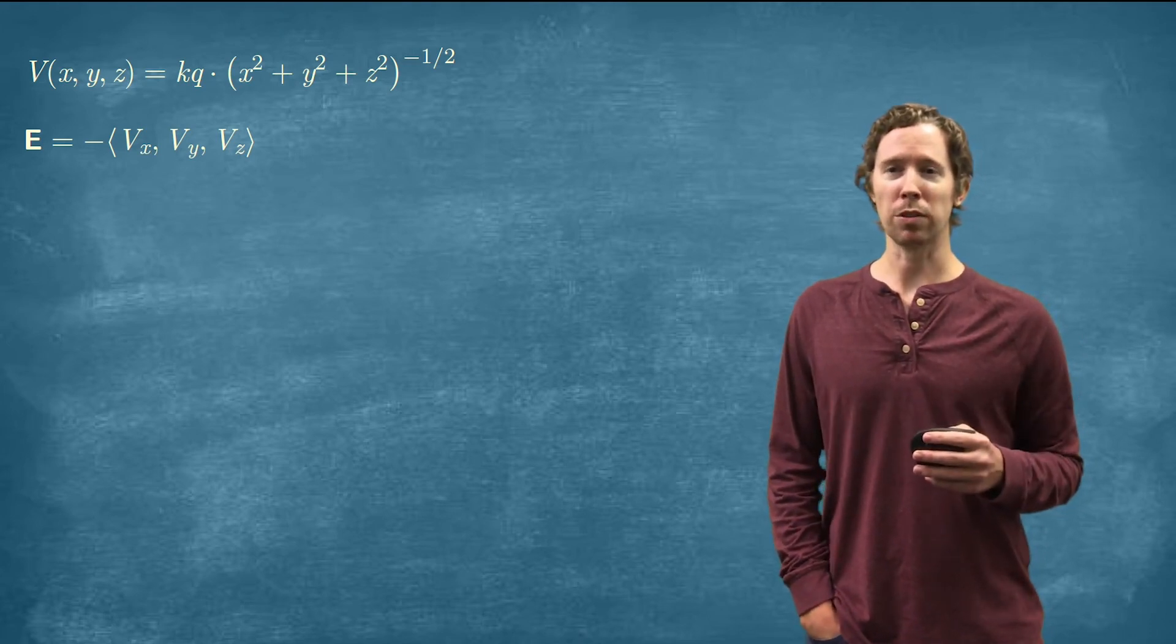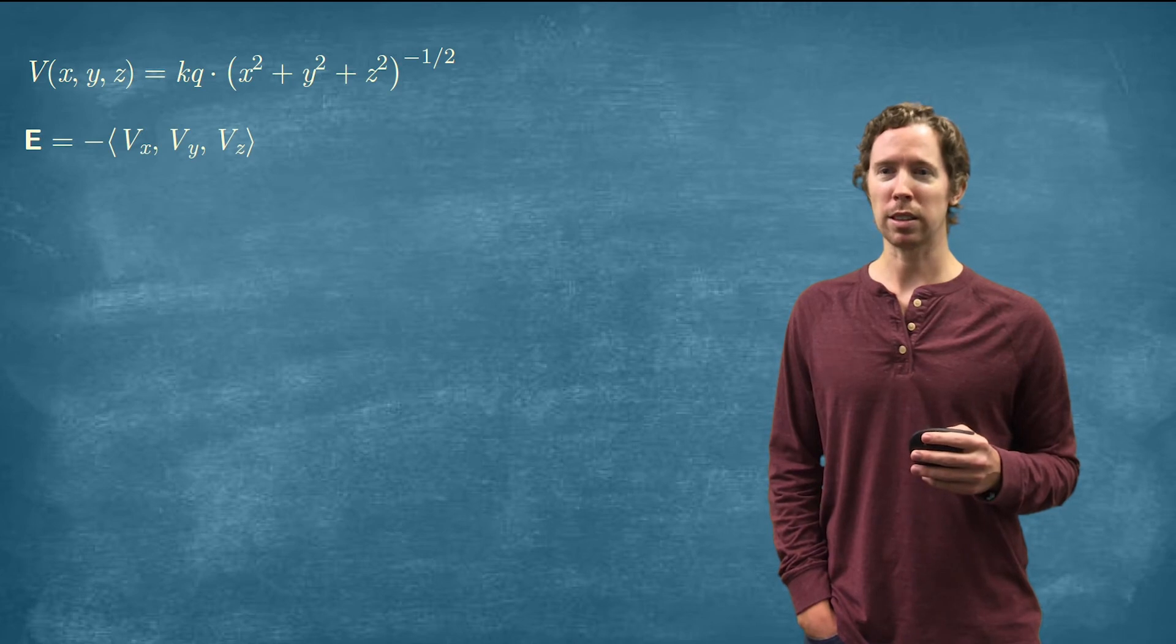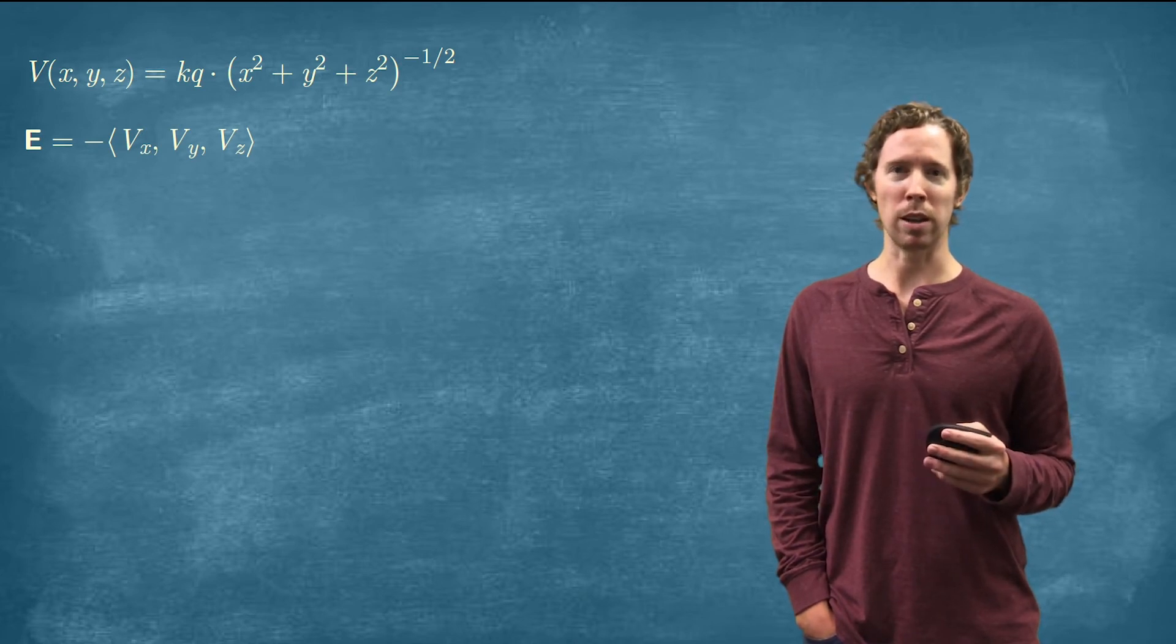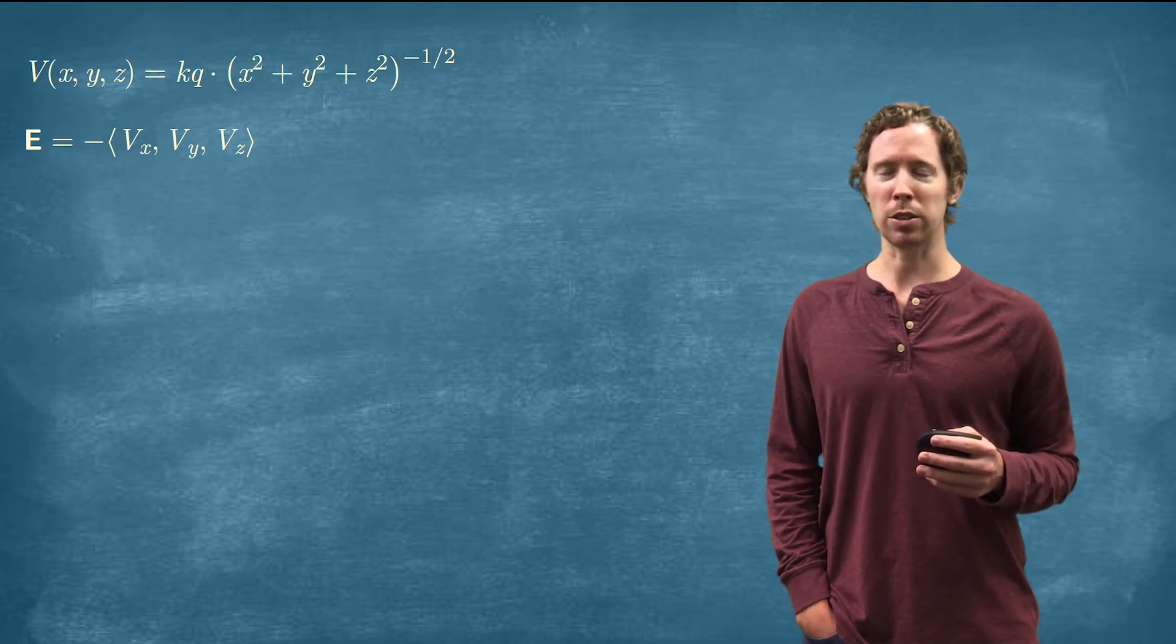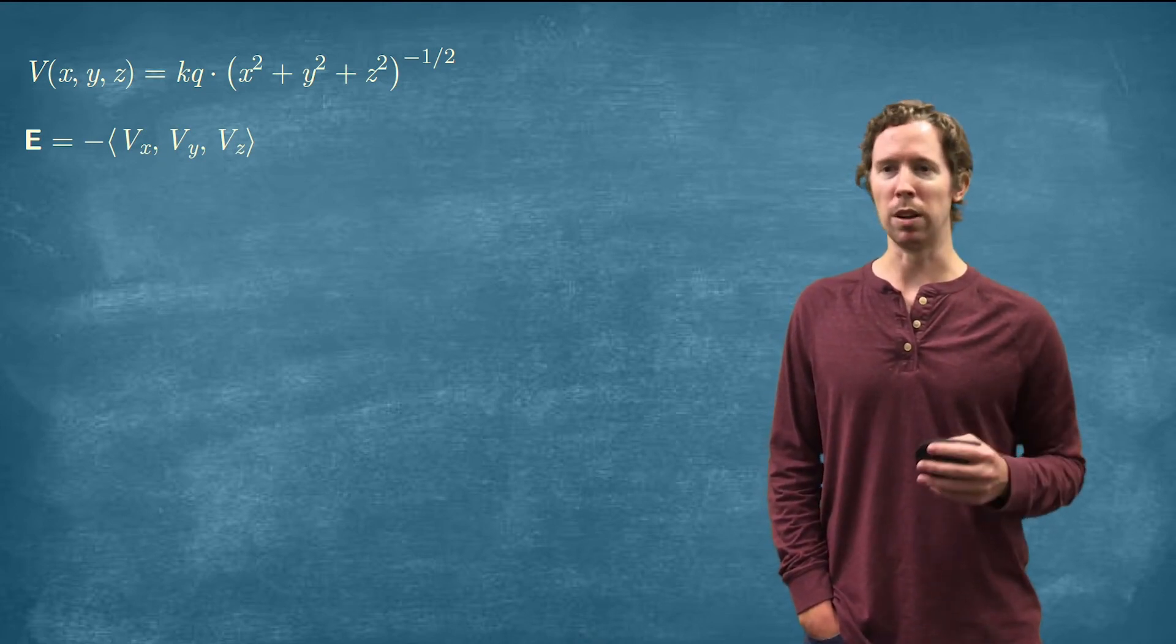I'm going to rewrite the potential function like this. I'm going to not write it in terms of R. I'm going to write it in terms of X, Y, and Z. And I'm going to write it to the negative one half power because I'm going to take derivatives.